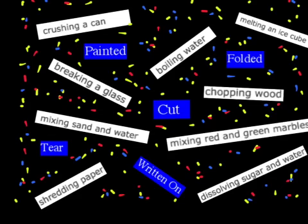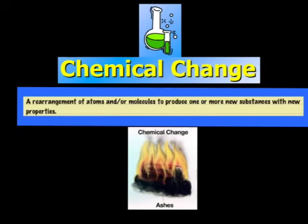If you do any of those actions, you still are not changing the actual substance — it's just either adding something to it or maybe changing the shape of it. Now let's take a look at chemical changes. Your book defines a chemical change as a rearrangement of atoms and molecules to produce one or more new substances with new properties.